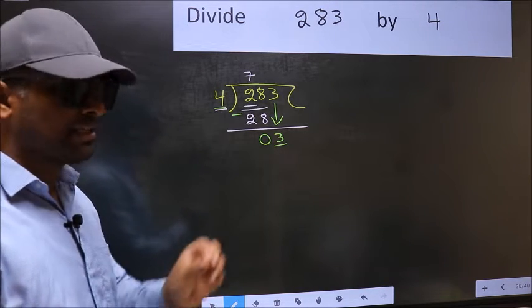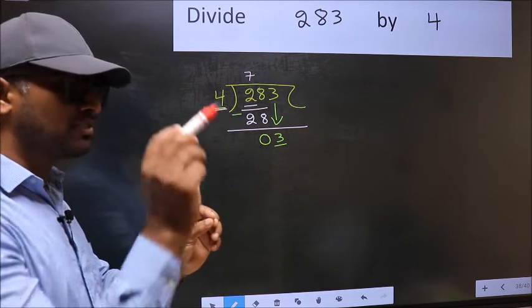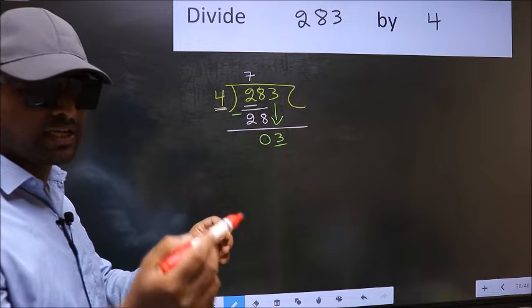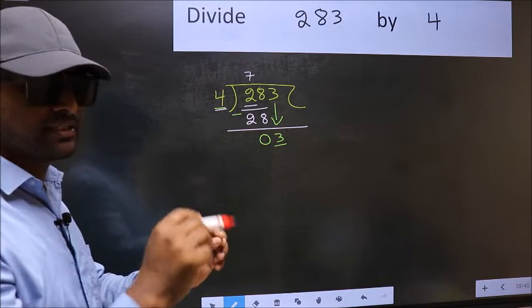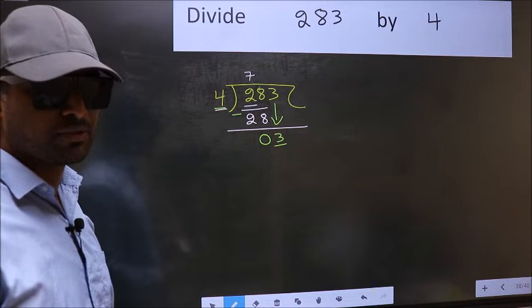Which is wrong. I repeat: bringing the number down and also putting a dot and taking 0, both at the same step, you are not supposed to do.